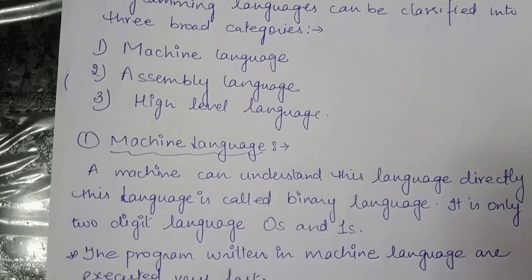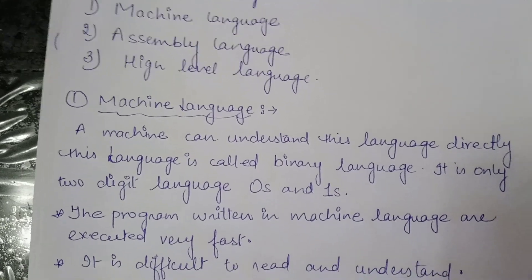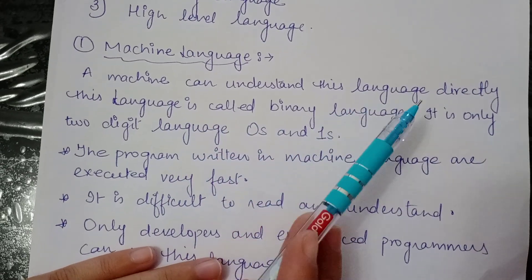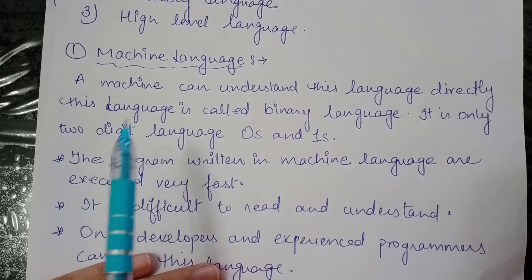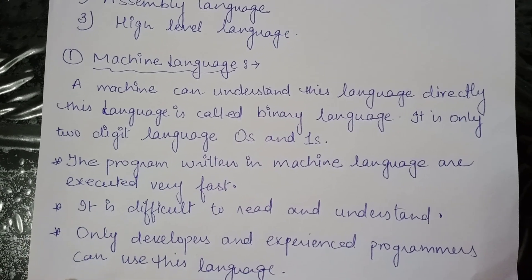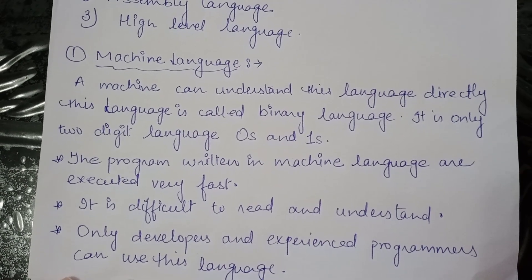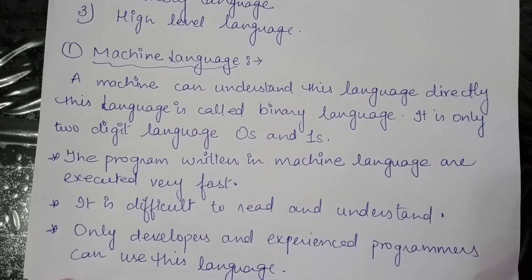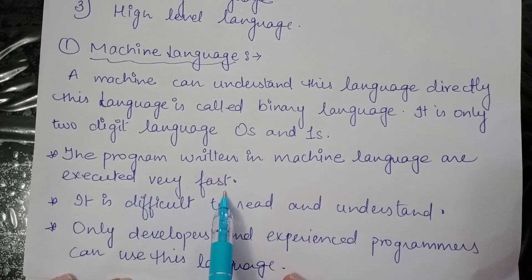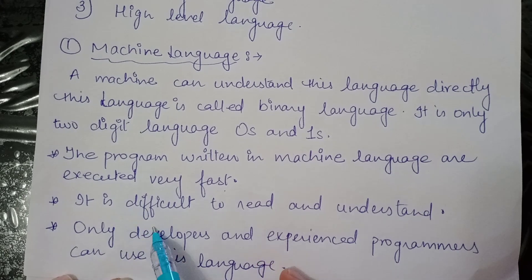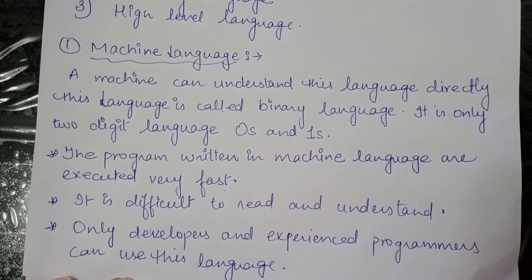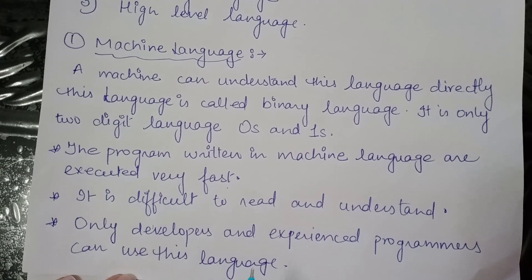In the case of machine-level language, the machine can understand this language directly. This language is called binary language — it is a two-digit language of zeros and ones. Programs written in machine-level language are executed very fast because we are talking in the computer's own language, so the computer understands it very easily and execution is very fast. But it is difficult to read and understand because programming in machine-level language means dealing with zeros and ones.